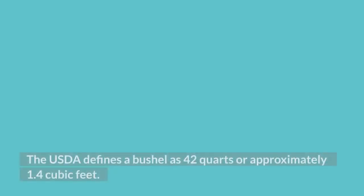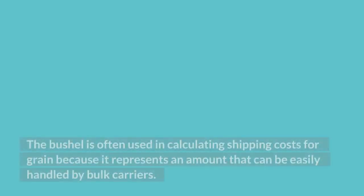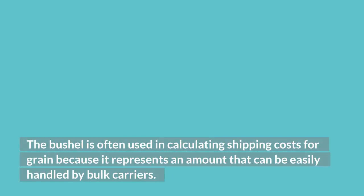The USDA defines a bushel as 42 quarts or approximately 1.4 cubic feet. The bushel is often used in calculating shipping costs for grain because it represents an amount that can be easily handled by bulk carriers.